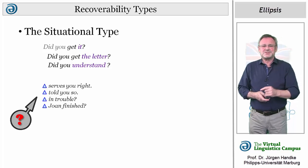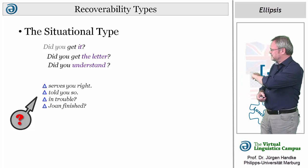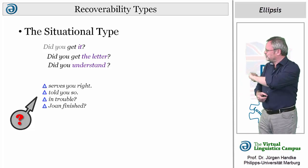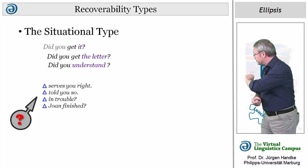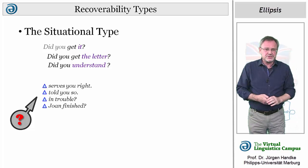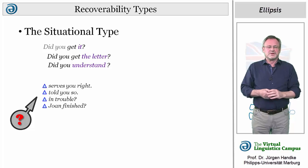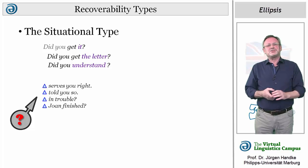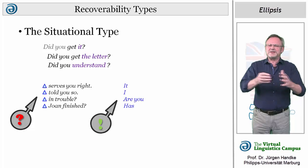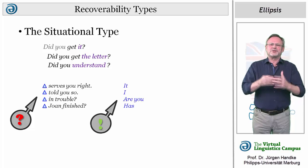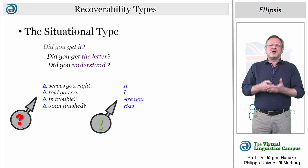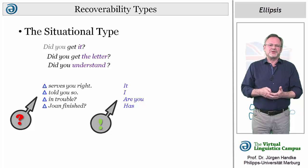Here are some examples: 'Serves you right?' 'Told you so?' 'In trouble?' 'Joan finished?' Situational ellipsis often applies to cases where it happens to be quite clear what has been omitted, and where the omitted words have weak stress and low pitch.